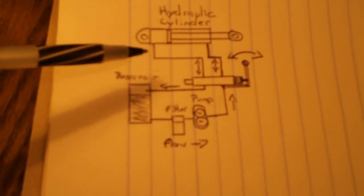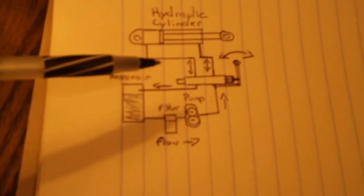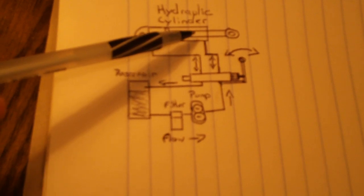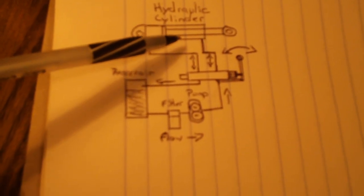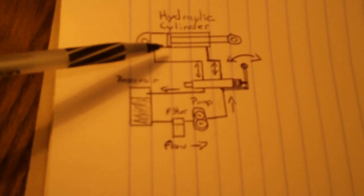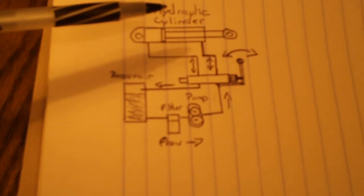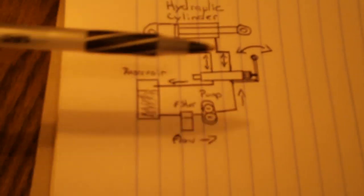And basically, what a hydraulic system is, is it uses multiplication to force a non-compressible liquid, which is hydraulic fluid, through a small orifice and push a cylinder back and forth.